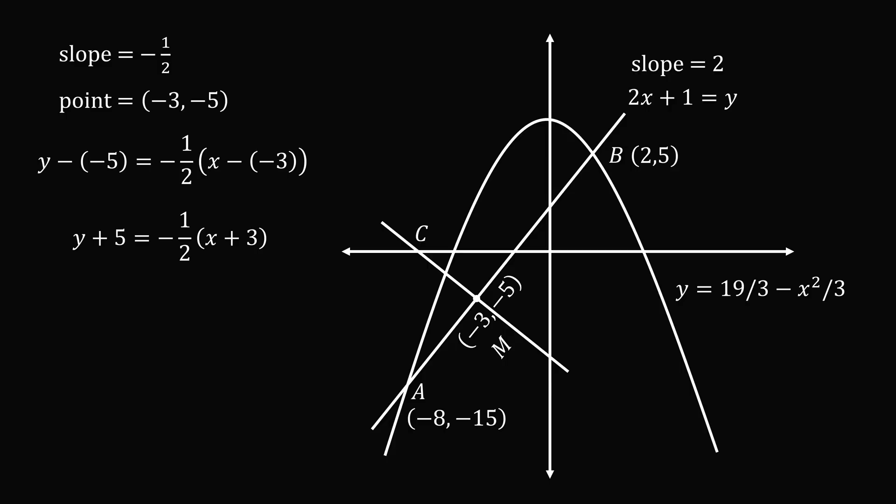Now let's say C is the x-intercept. So at that point y equals 0. So substituting y equals 0, we can solve for the x coordinate. So we have 0 plus 5 equals negative 1 half multiplied by x plus 3. We multiply both sides of the equation by negative 2 and then subtract 3 from both sides of the equation to get x equals negative 13. So the point C is at negative 13 comma 0.